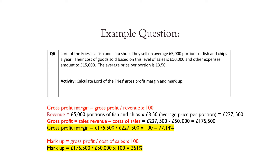First, we work out the gross profit margin. In order to work out the gross profit margin, we would do gross profit divided by revenue times by 100. In this question, they haven't given us the revenue, so we need to work it out. Revenue is quantity, which is 65,000 portions times by price, which is £3.50 — that gives us £227,500. The gross profit is sales revenue minus cost of sales: £227,500 minus £50,000 gives us £175,500. So the gross profit margin is £175,500 divided by £227,500 times that by 100, which gives you 77.14%.